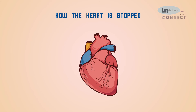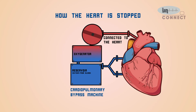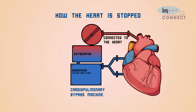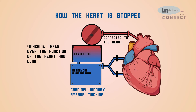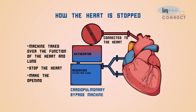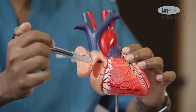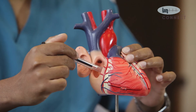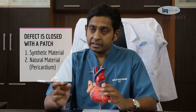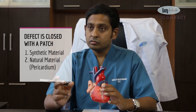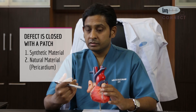To perform the surgery, we need to stop the heart for a short while. The heart is connected via pipes to the cardiopulmonary bypass machine, which then takes over the function of both the heart and the lungs. The heart is stopped, and depending on where the defect is, an opening is made in the heart — usually on the right side. Once that is opened, we can easily identify the defect and close it using a patch.